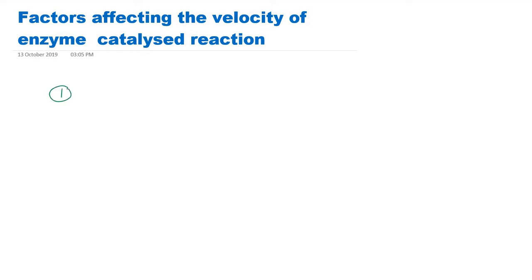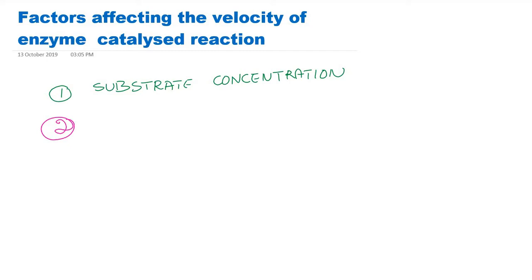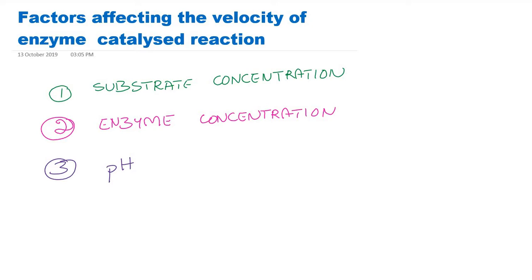The first factor which influences enzyme activity is substrate concentration, which we have already discussed in the previous video. The second factor is the concentration of enzyme itself. The third factor is hydrogen ion concentration or pH. The last factor we will discuss today is temperature. Apart from these four, there are other factors like effect of products, inhibitors, and activators.